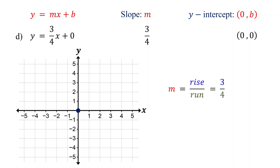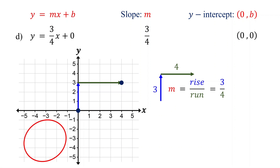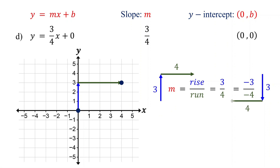Since the slope is 3/4, the rise is 3 units up, and the run is 4 units to the right. Now, starting from the y-intercept, move up 3 units. Then move to the right 4 units and plot the second point. You can now draw a line that passes through these two points. But if you want to plot another point on the opposite side, change the signs of both the numerator and the denominator of the slope. With the modified slope, the rise is 3 units down, and the run is 4 units to the left. Starting from the y-intercept, move down 3 units, then to the left 4 units, and plot the third point. Finally, draw a line that passes through the points.